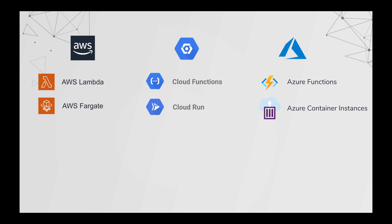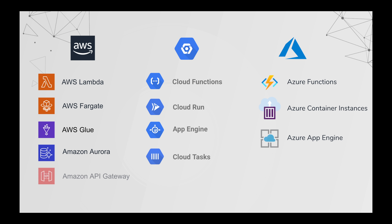An event could be an HTTP event or an event from a queue. The same applies to the Azure cloud platform — there is Azure Container Instances which can be triggered based on events, and these are all purely serverless. There are also other offerings from these cloud platforms, including AWS Glue, App Engine from Google Cloud, Azure App Engine, and Cloud Tasks from Google Cloud. Amazon provides tons of managed services which can be leveraged as a serverless offering because you're charged only when you use them and you don't have to worry about scalability.